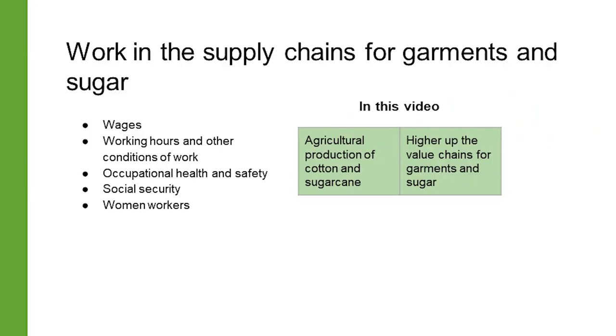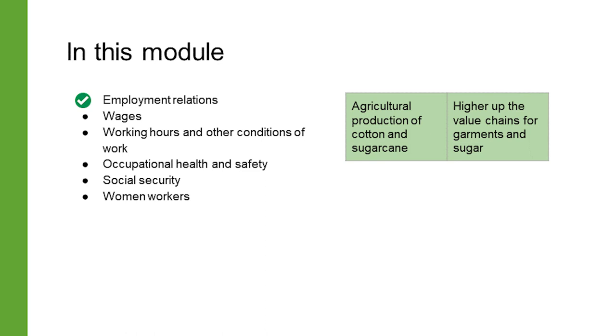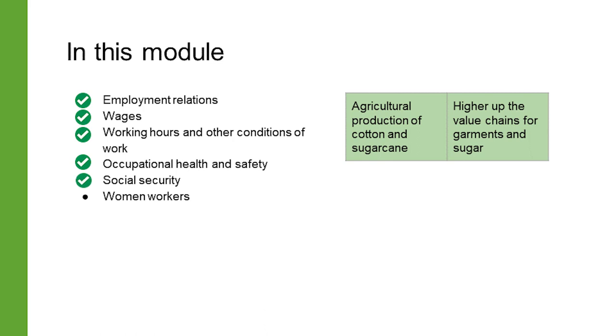This closer examination of the issues faced specifically by women workers in the supply chains for sugar and garments brings us to the end of this module. We first learned about the overall structures of these supply chains and employment relationships, then looked in detail at wages and working hours, health and safety, social security, and issues faced specifically by women workers. This has given us a good idea of how to gauge whether work measures up to decent work standards. Once workers have determined that their work does not measure up, the subject of what remedies they can seek is the topic of the next module. Thank you for watching.